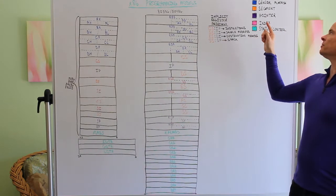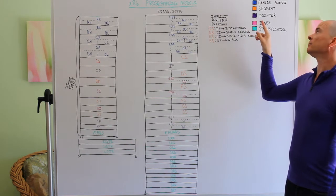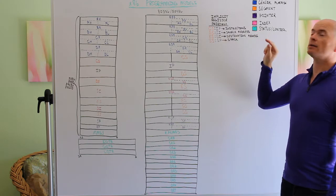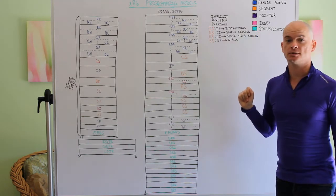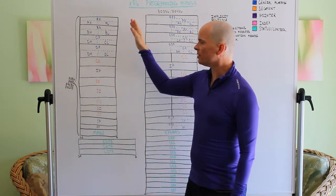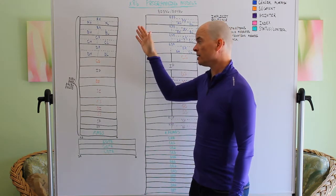Let's first go over our colors here. We have blue general registers, orange segment registers, purple pointer registers, pink index registers, and green status control registers. Over here on the 8086, 8088, 8186, 8188,